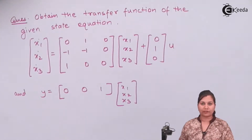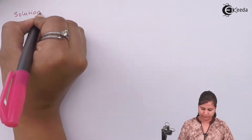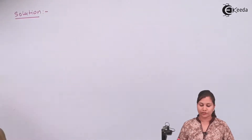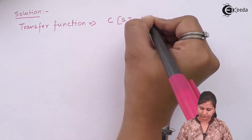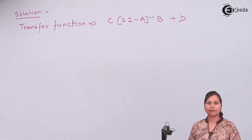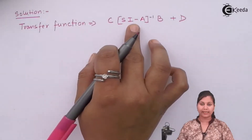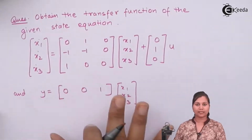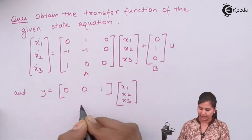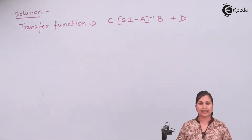We know that when we want to derive the transfer function from the state model, we have a formula for it. The formula for the transfer function is C(SI - A)⁻¹B + D. For this we have to first find out the SI minus A inverse, and then multiply it with the C matrix and the B matrix. These matrices are given to us in the question. This is our A matrix, this is B matrix, and this is C matrix. D matrix is not given, so it is 0. We will first find out the SI minus A inverse.